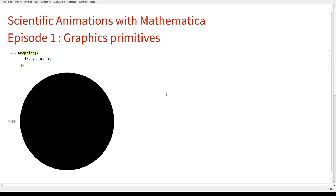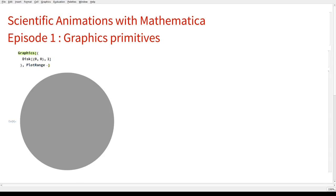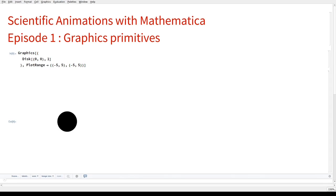What we want is to make this disk in a much larger space. So let's define what is going to be the plot range of our graphic. This way, we have now a bounding box of our graphics between minus 5 and 5 in both directions, and our disk is still of size 1. We are going to adjust that later.